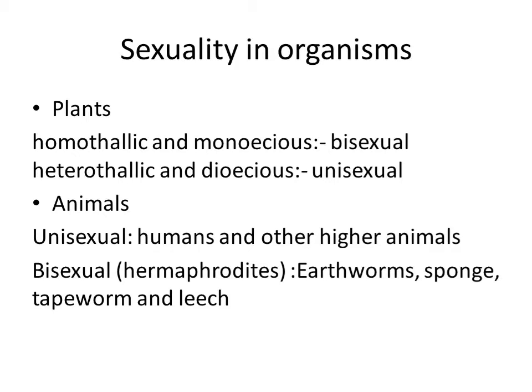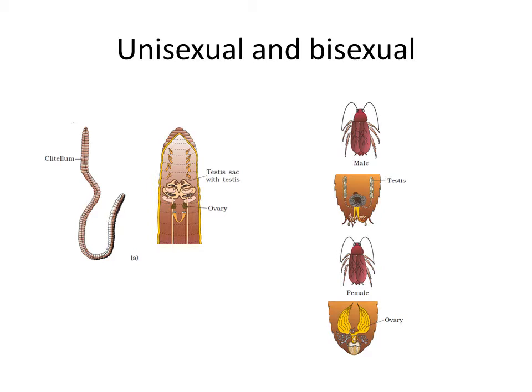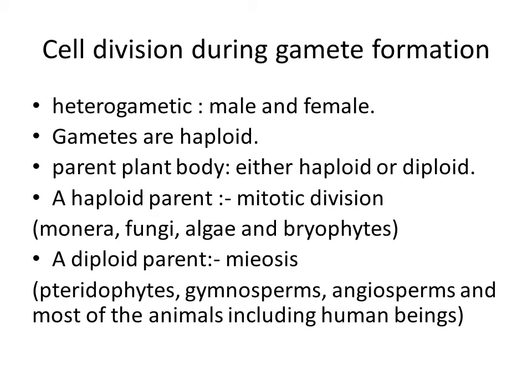In animals also, both unisexual and bisexual organisms exist. Earthworms, sponges, tapeworms, and leeches are typical examples of bisexual animals that possess both male and female reproductive organs, and they are called hermaphrodites. Cockroach is an example of a unisexual species. The earthworm is bisexual — both testes and ovaries are present in the earthworm — but cockroaches have separate male and female individuals. Males have testes and females have ovaries.